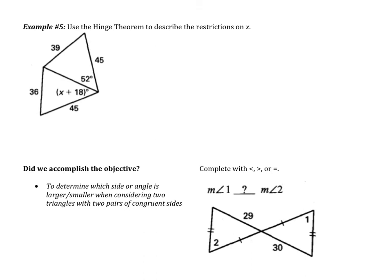Besides doing the hinge theorem with plain greater than or less than and with numbers, we're also going to have some algebra involved. Example five says to use the hinge theorem to describe the restrictions on X. The hinge theorem applies because of one pair of congruent sides and the reflexive property. Looking at the angle of 52 and X plus 18: 52 is located across from the larger side — 39 is greater than 36 — so 52 is greater than X plus 18. Subtracting 18 gives 36 is greater than X, meaning X has to be less than 36.